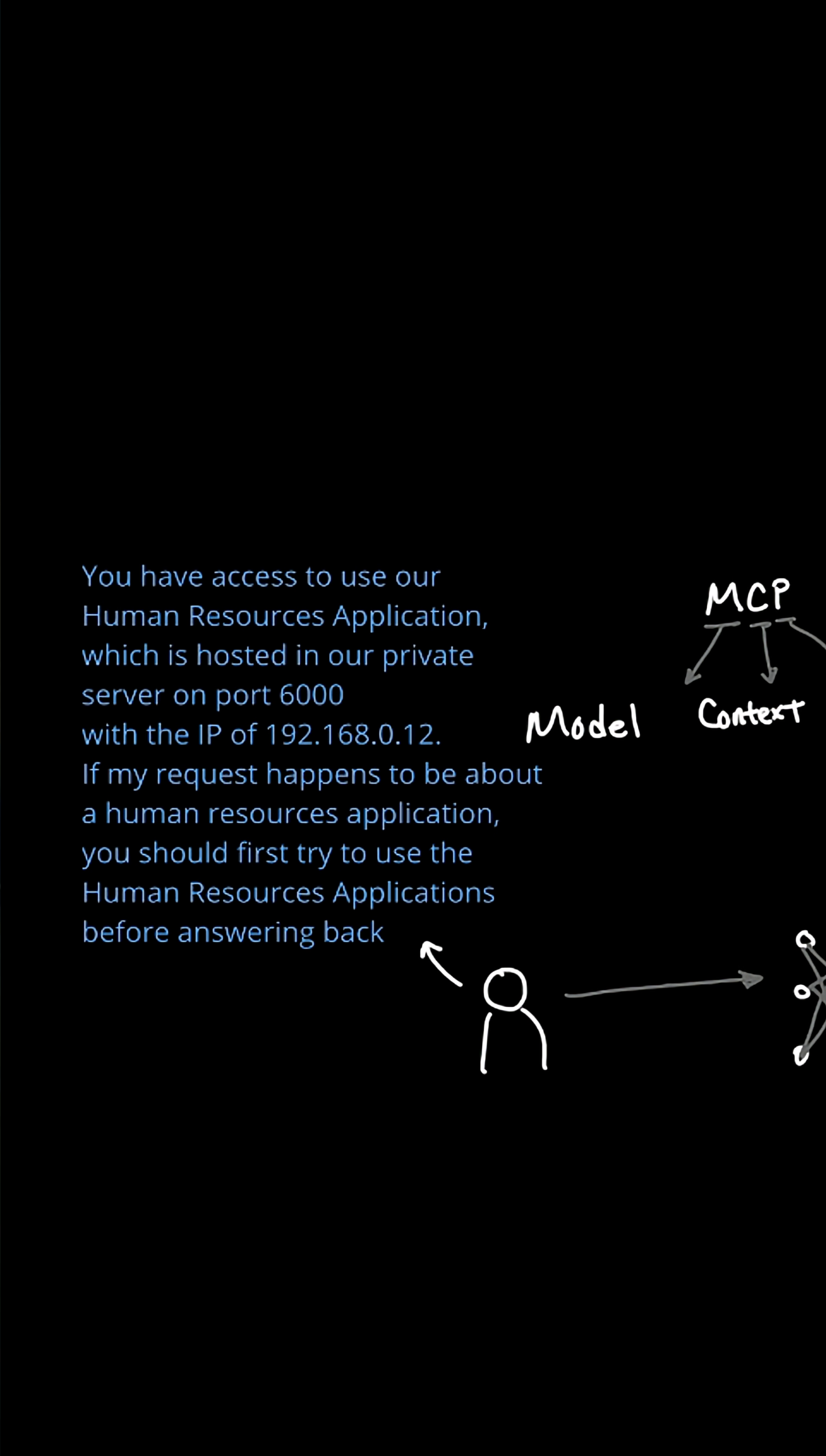So you'll have to somehow write up a whole prompt before writing your original prompt with something like this: You have access to use our human resources application, which is hosted on our private server on port 6000 with the IP of 192.168.0.12. If my request happens to be about a human resources application, you should try to use the human resources application before answering back. And once this draft is in your prompt, you can then append it to the subsequent request from earlier that says, can you request time off for next Friday?